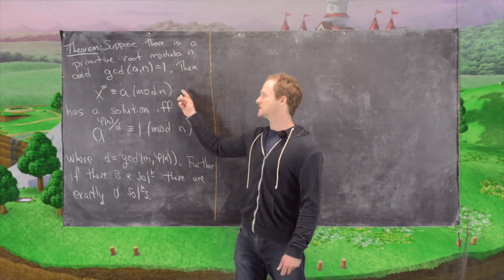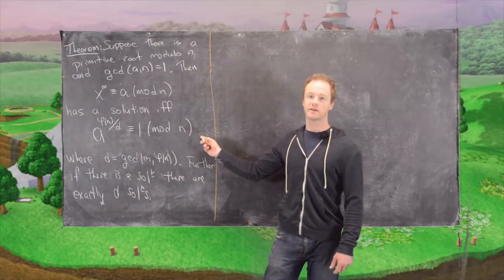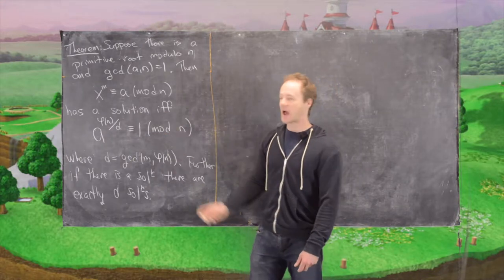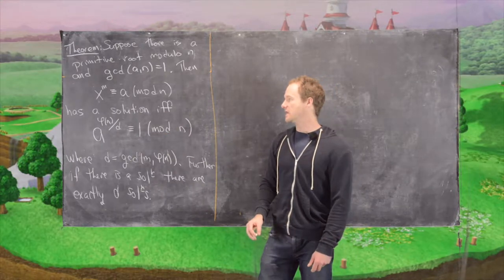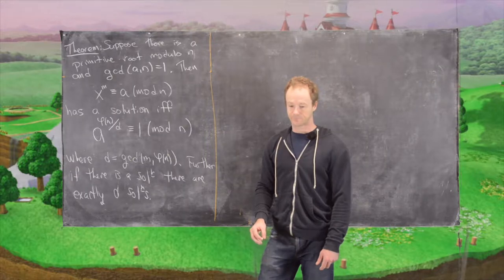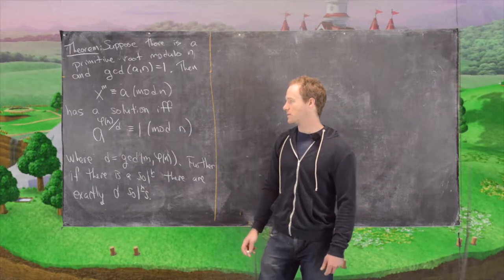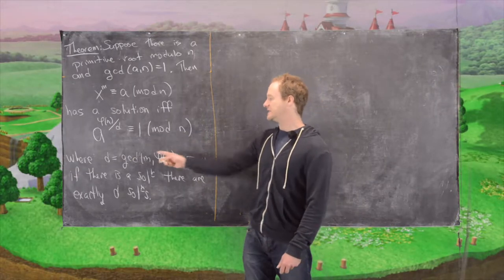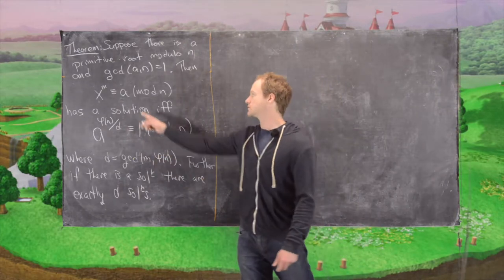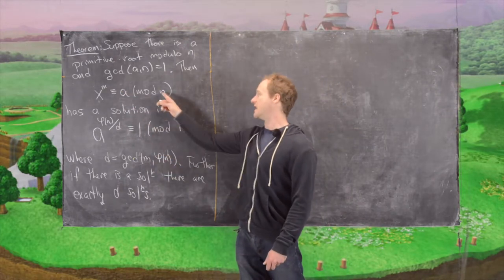This congruence has a solution if and only if a to the power of phi of n divided by d is congruent to 1 mod n, where d equals the GCD of m and phi of n.